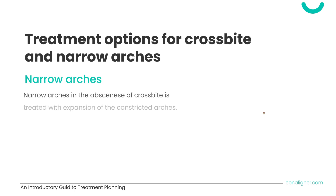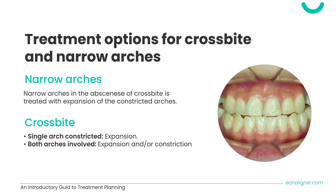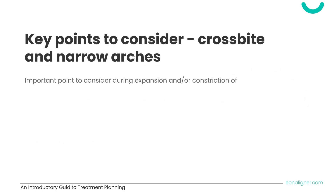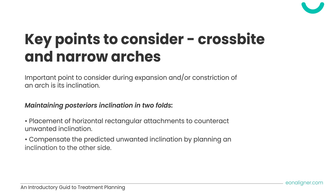Next, we'll discuss how to treat crossbite and narrow arches. If the arches are narrow with no evident crossbite, treatment options include expanding both arches to achieve a fuller smile and decrease the large buccal corridor. In the case of crossbite, examine the arches closely to decide whether to expand one, constrict another, or perform a combination of both. During expansion and/or constriction, it is important to consider arch inclination. To maintain posterior inclination, consider placement of horizontal rectangular attachments to counteract unwanted inclination, and compensate by planning inclination to the other side in the treatment setup.